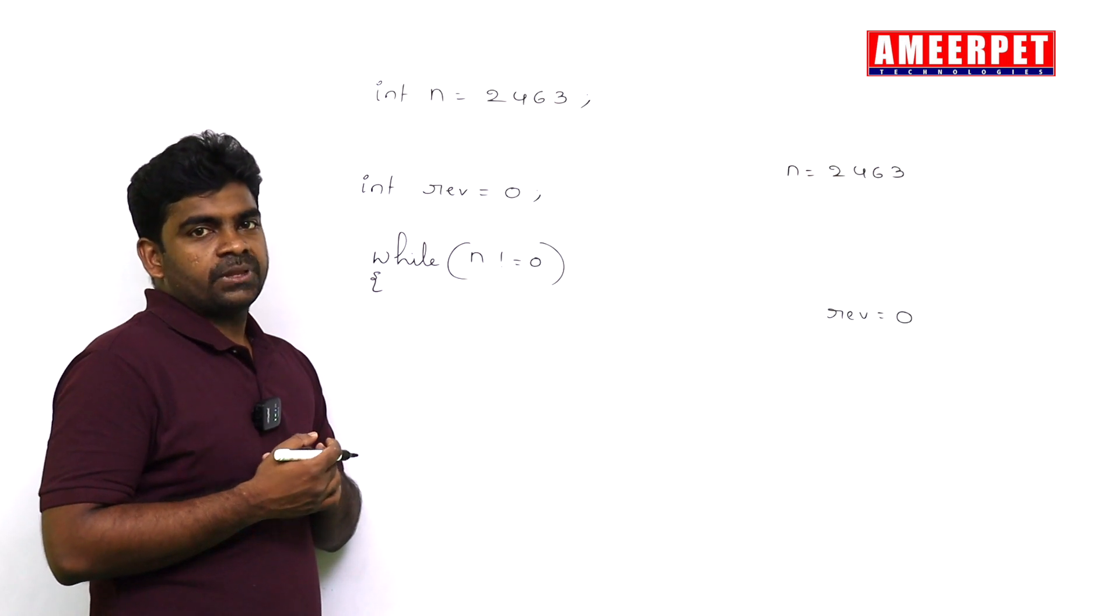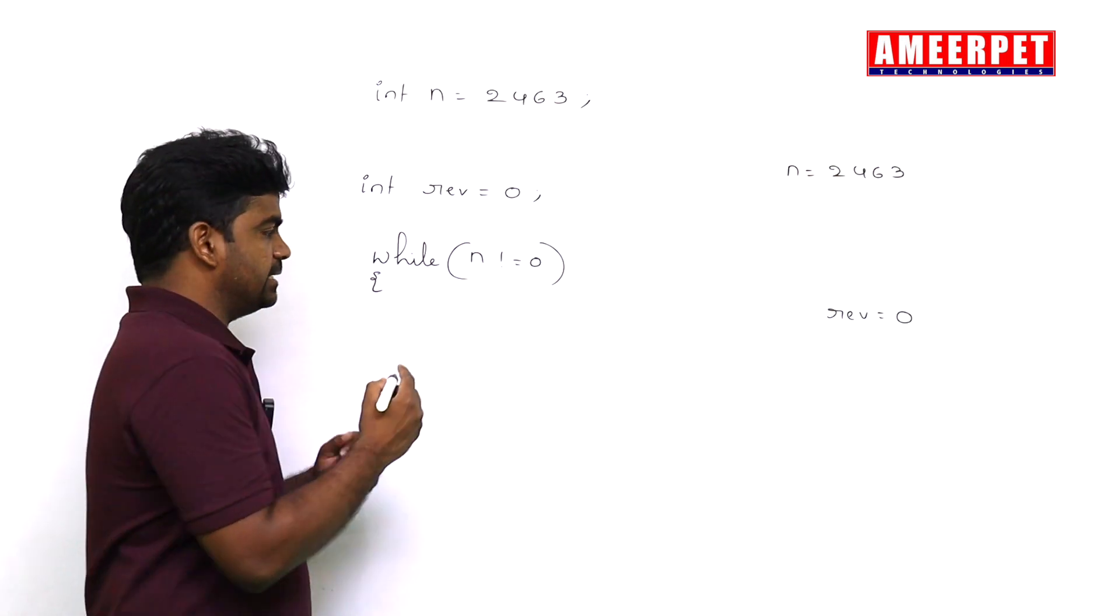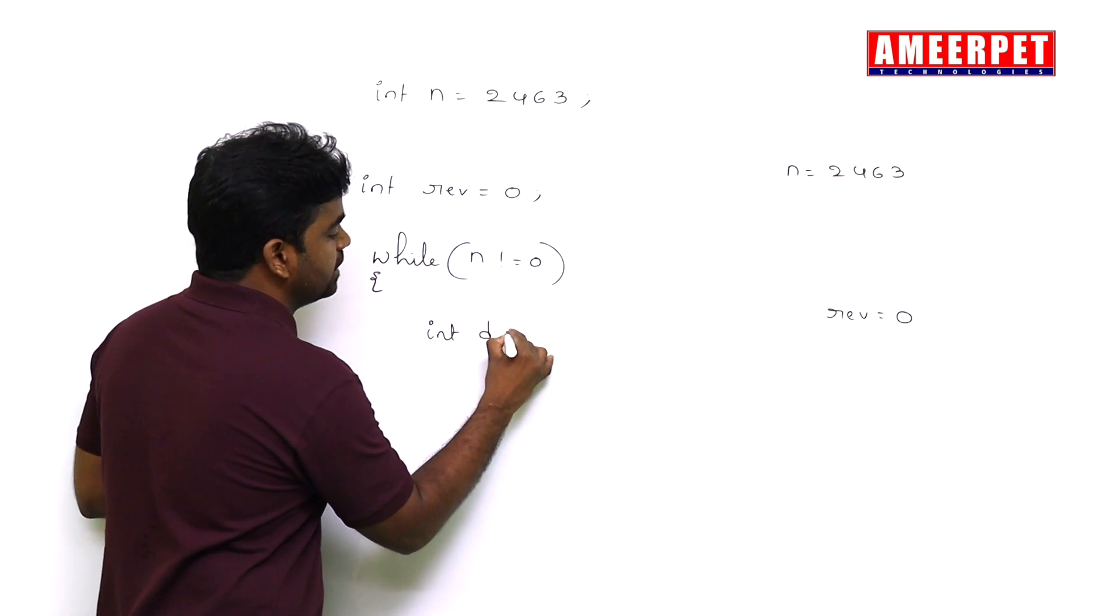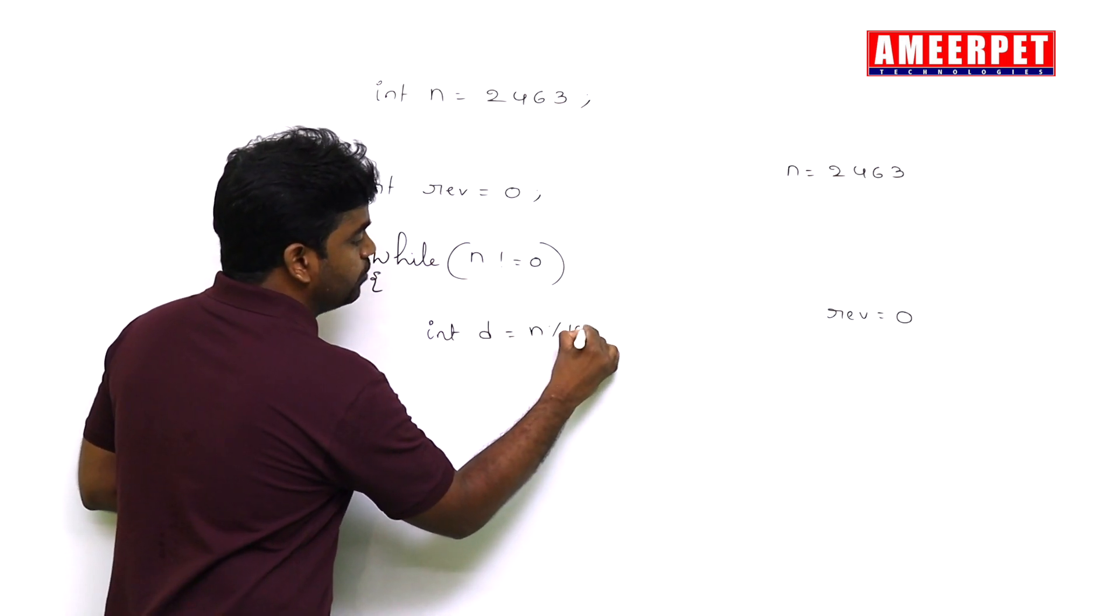First we are getting the digit. How to get the digit? Integer d equals to n mod 10.